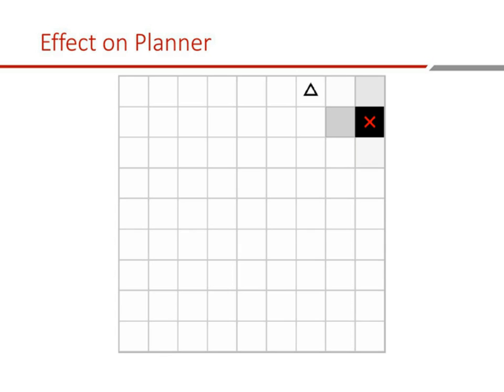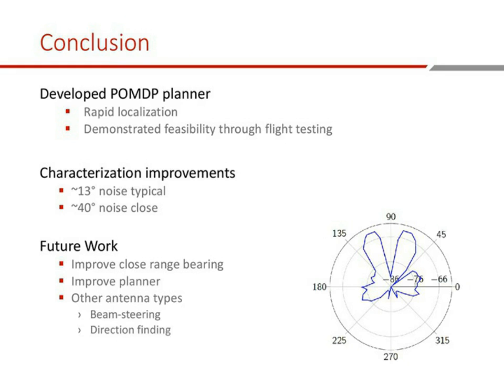To wrap up: we developed a POMDP planner able to do rapid localization of a signal source. We demonstrated feasibility through flight testing and brought in antenna characterization to improve the planner further. Going forward, improvements include getting better close-range bearing accuracy, making the planner even faster, and looking at different antenna types — like beam-steering or direction-finding antennas. The next big step is also moving from Wi-Fi to actual GPS for all these tests.